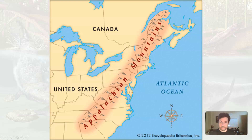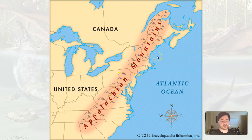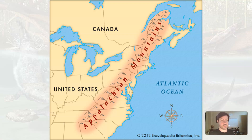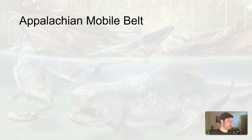The current Appalachian Mountains are off the East Coast, but these are actually very old mountains. These are kind of the United States' original mountains, much older than the Rocky Mountains. So let's talk about how the Appalachian Mountains came to be.